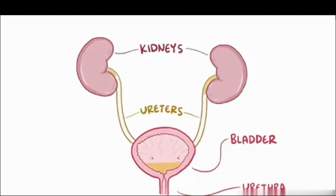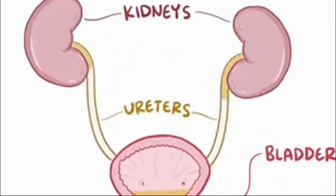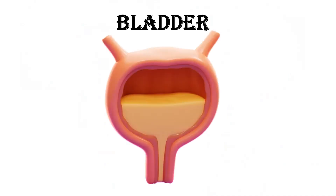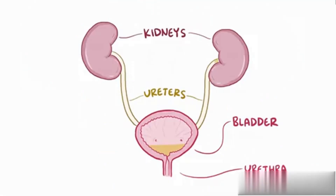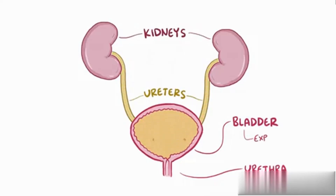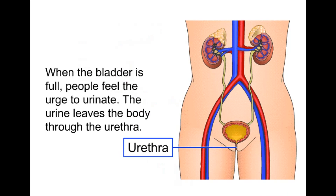We have a pair of ureters — tubes that carry urine from the pelvis of the kidney to the urinary bladder. There are two ureters, each connecting one kidney to the bladder. The bladder is a muscular sac located in the pelvis that stores urine until it is excreted from the body.